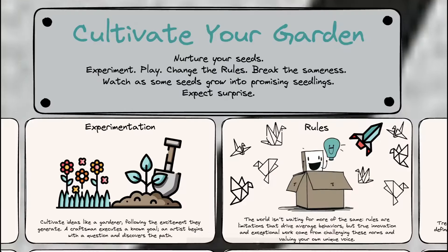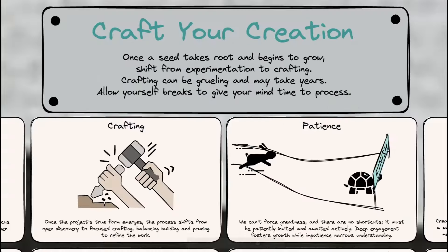Rick continues that once you have your seeds planted, you should be gardening them. Gardening means experimenting, trying different things out, trying the opposite of what others are doing or what you've been doing previously. It's about playing like a child with your ideas and expecting surprise to happen. And once you play with your ideas and seeds, some of them will start to develop. When you see a promising seedling, that's the time to move from the experimentation gardening role to more of the crafting role.